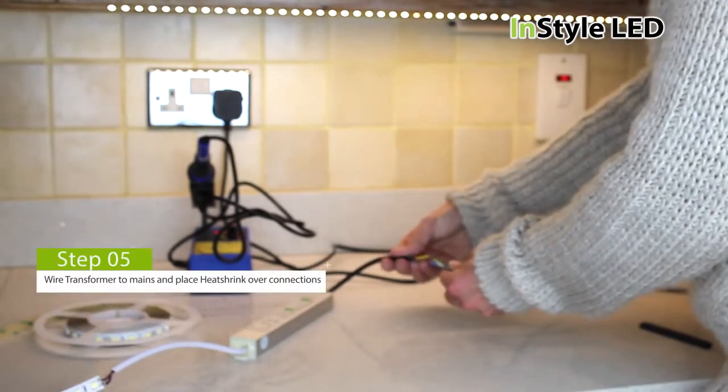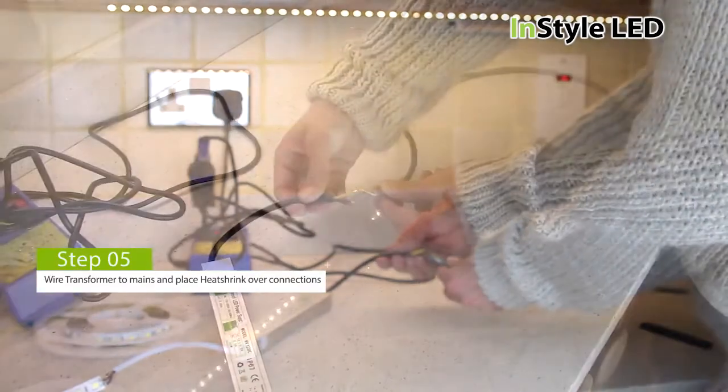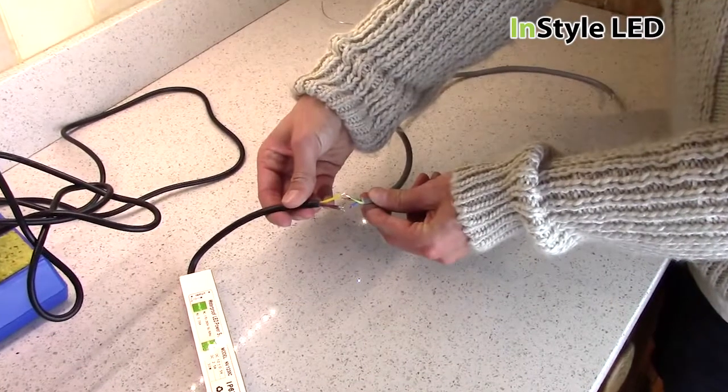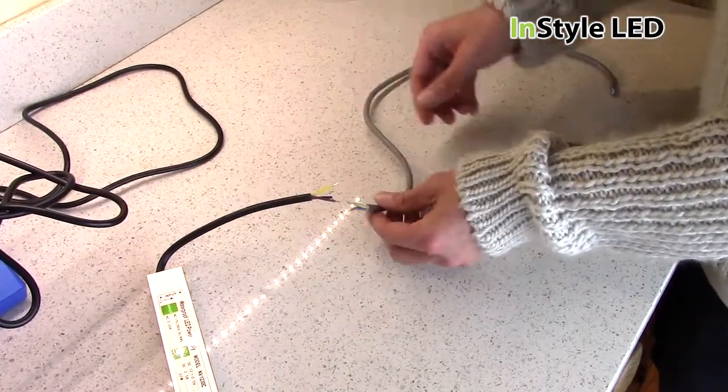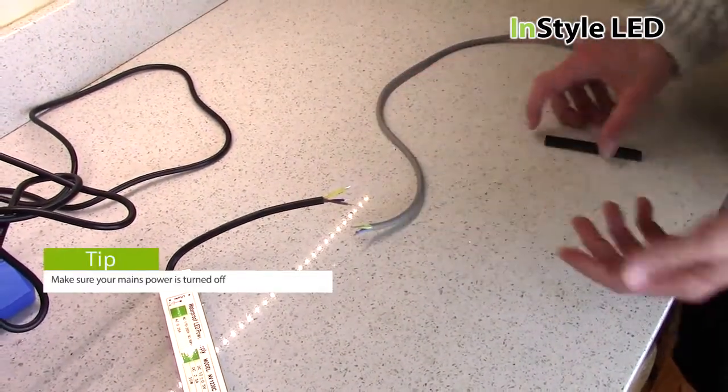Next wire the input cables of the transformer to your mains feed. Make sure you have disconnected power. Then heat shrink each cable and finally heat shrink over all of these cables.